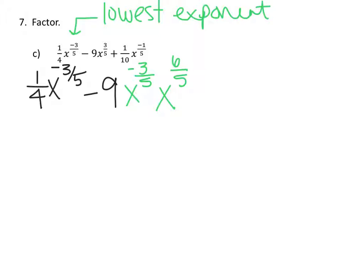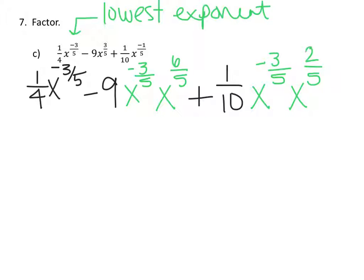Now let's focus on the last term. I want to keep the 1 tenth and incorporate the lowest exponent x to the negative 3 over 5. Since negative 3 over 5 plus 2 over 5 equals negative 1 over 5, I include x to the 2 over 5 in my third term. Now I have that lowest exponent present in each term.